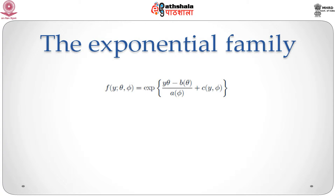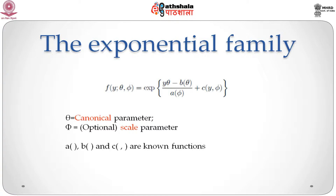The exponential family is specified by the probability mass function or probability density function of the form: given a parameter theta and an optional parameter phi, f of y given theta and phi is equal to exponential of y*theta minus b(theta), divided by a(phi), plus c(y, phi). Here theta is the canonical parameter indexing the family. The canonical parameter can be slightly different from the natural parameters used to index commonly known families such as the Poisson and the binomial, which are all special cases of the exponential family.